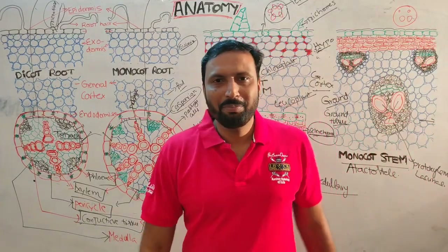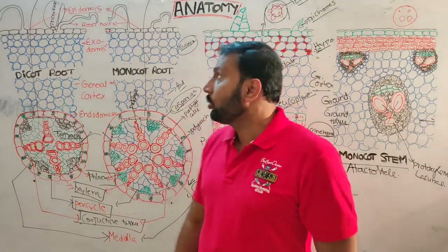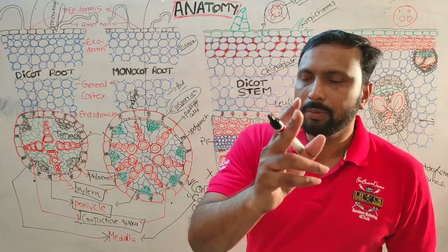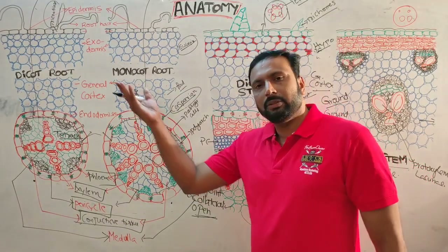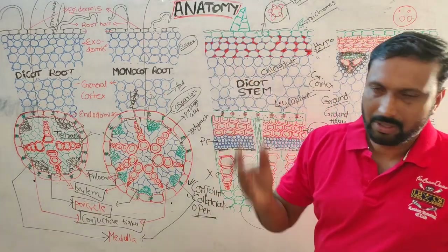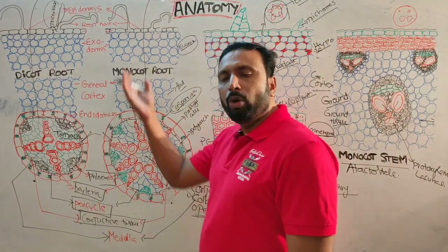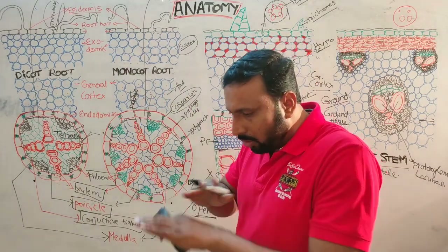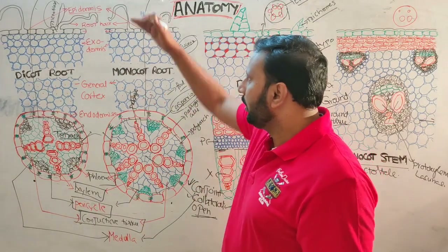Hello, good morning. I am BSR, Botany lecturer. Today our topic is a quick revision on Anatomy. We will cover root, stem, and leaves — both dicot and monocot — and their internal structure.